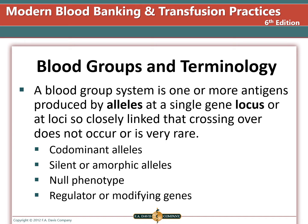Other than the O gene, most silent alleles are rare. However, when a paired chromosome carries the same silent allele, a null phenotype can result. Some blood group systems have regulator or modifying genes which alter antigen expression. These are not necessarily located at the same loci as the blood group genes they affect and may segregate independently.